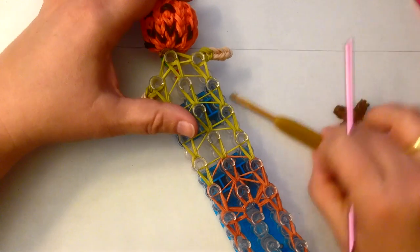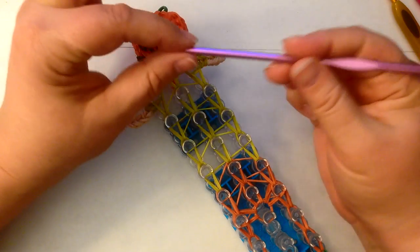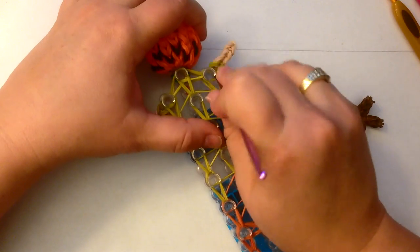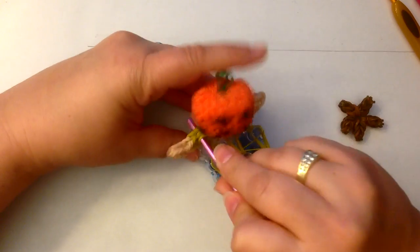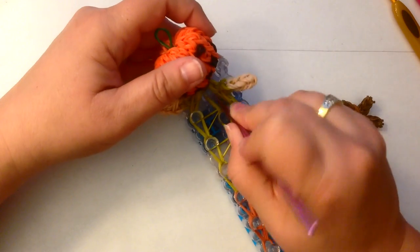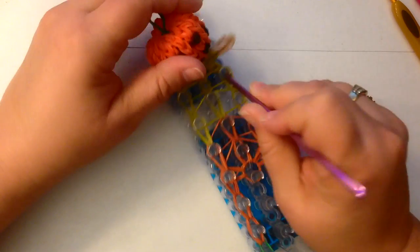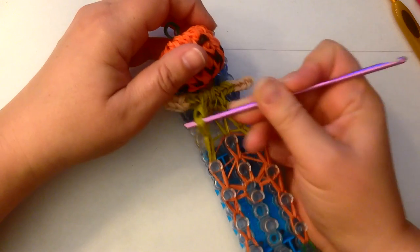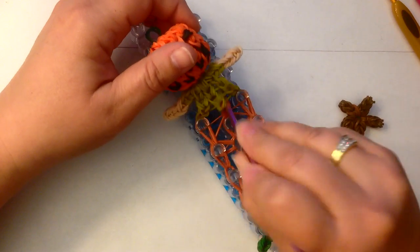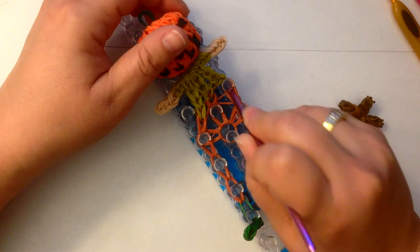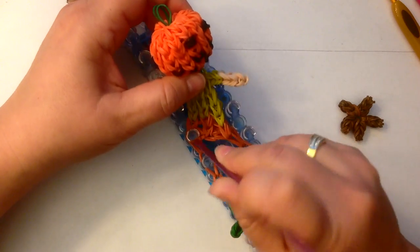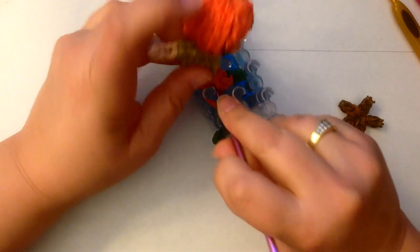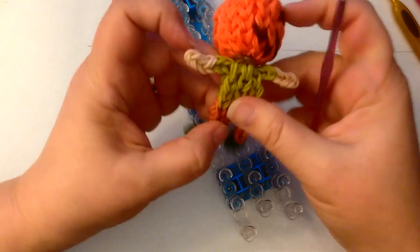I like to use the back of a hook to help me. I have a hook that doesn't have a handle. It's just got a metal shaft to it. I'm going to just use that to help me ease my little guy off the loom. There we are.